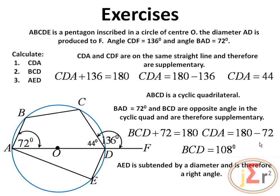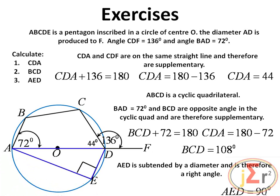To find angle AED: notice that triangle AED has one side as a diameter, with vertex E on the circumference. An angle subtended by a diameter at the circumference is always 90 degrees. Therefore angle AED = 90 degrees.